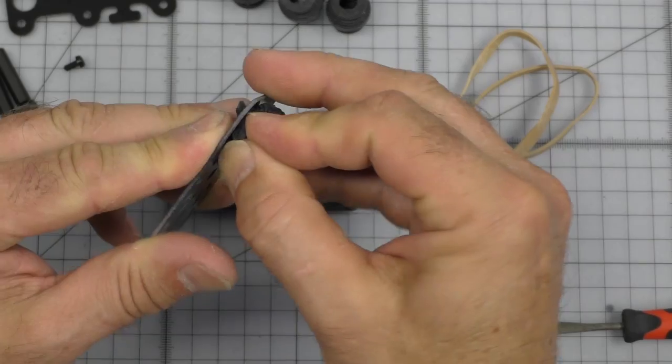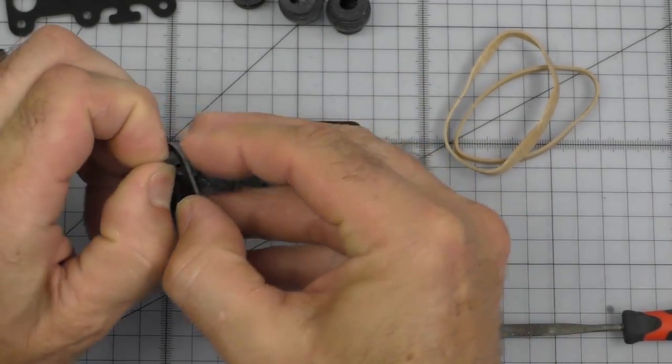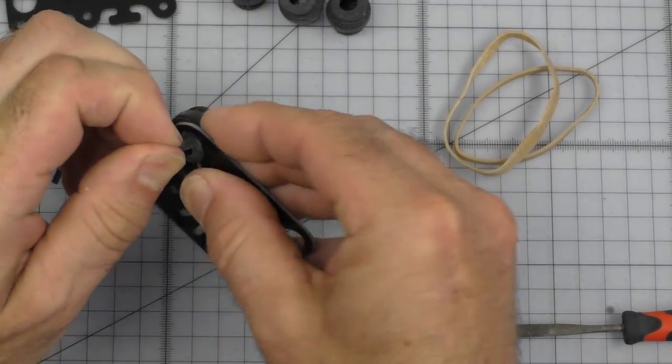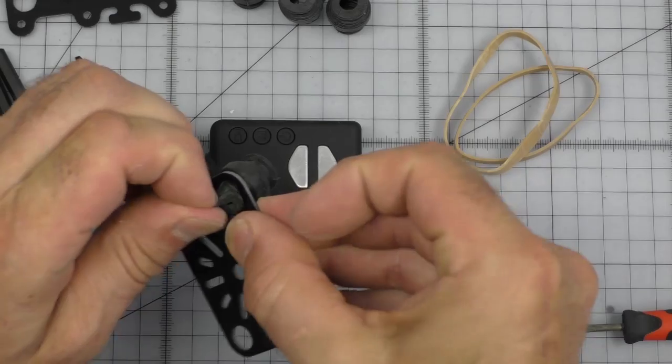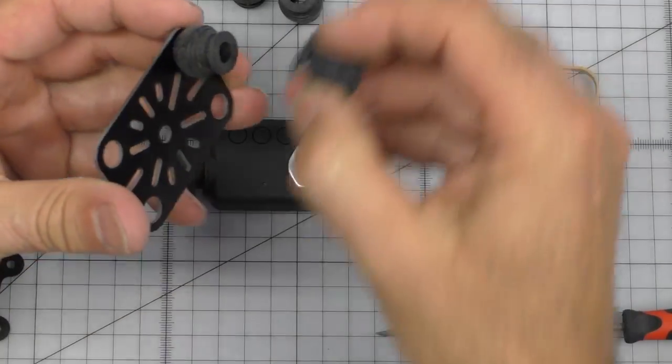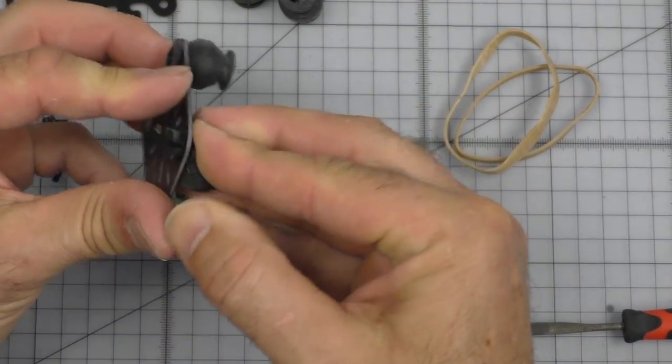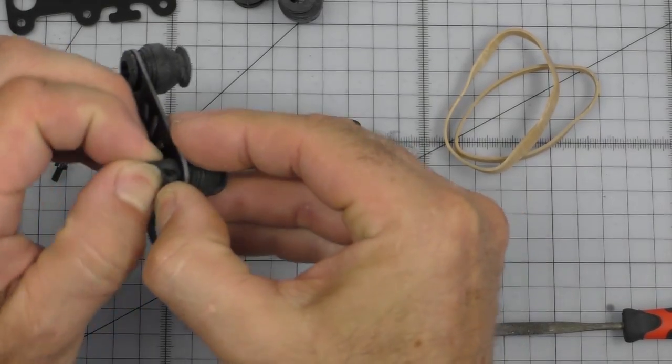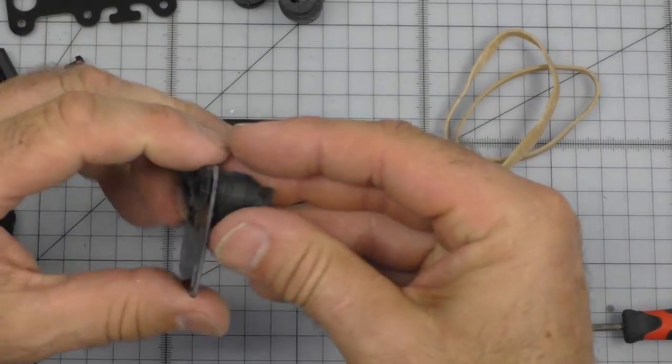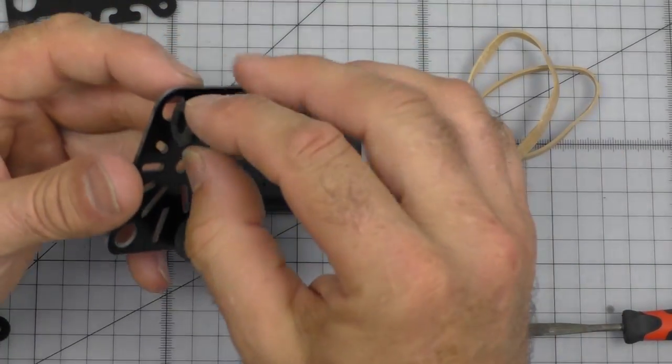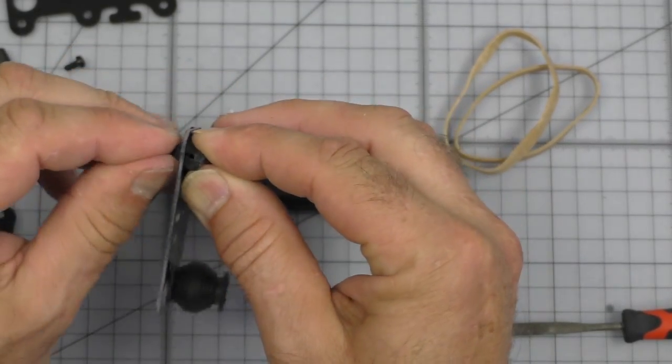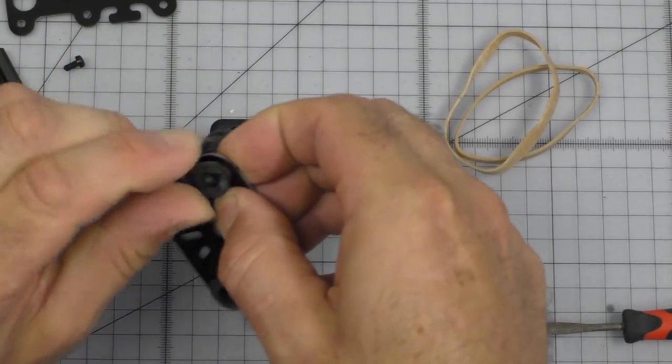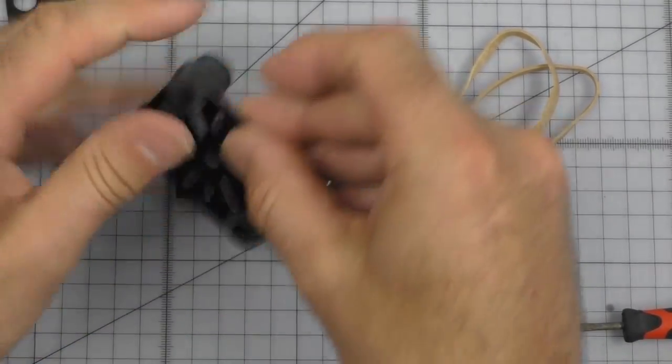So gonna start off with the base plate. You can just squeeze these on, push them through and give them a little pull. Here's one. Make sure you push it more than halfway through, then they come through quite easily. Two, three, four.